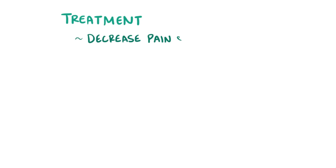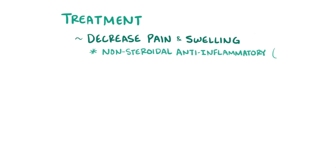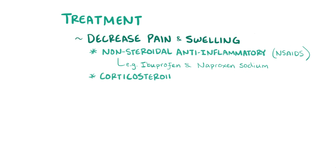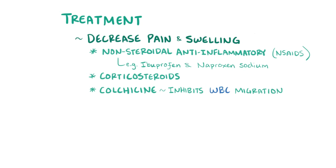Treatment of a gouty attack is typically focused on decreasing the pain and the swelling, most often with non-steroidal anti-inflammatory medications, or NSAIDs, like ibuprofen or naproxen sodium, but occasionally with corticosteroids as well. Colchicine, which has anti-inflammatory effects by inhibiting white blood cell migration, has also been used for a long time to treat gouty attacks.